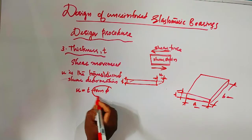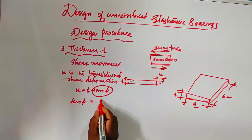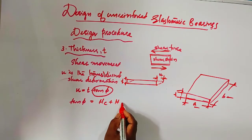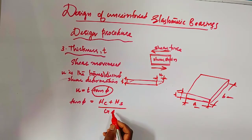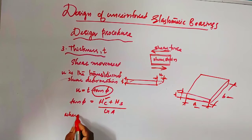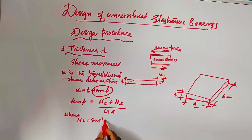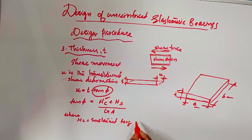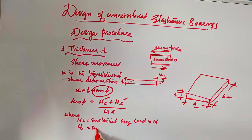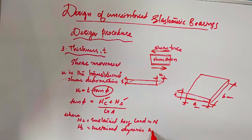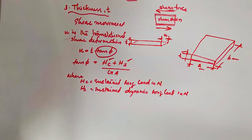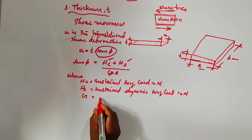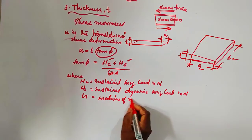Where tan(φ) can be calculated by the formula: (hc + hs) divided by (G × A). Here, hc is the sustained horizontal load in Newtons, hs is the sustained dynamic horizontal load in Newtons, and G is the shear modulus (modulus of rigidity) in Newton per mm².